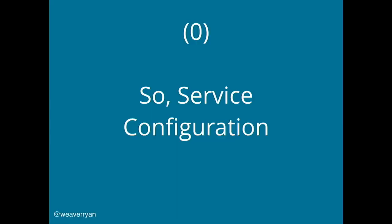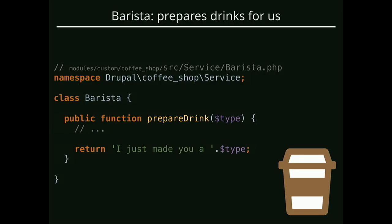So, service configuration. What we're going to do here is a little bit of setup — I want to go through a couple bits of code so you can get an idea of what we're building. We're going to start with a class called Barista, because of course we're in the land of coffee. It has a method called prepareDrink — you pass it an argument and it returns a string. Just imagine this is a class you created for some reason and you're using it in various places in your code. All the code is going to be inside of a custom module.